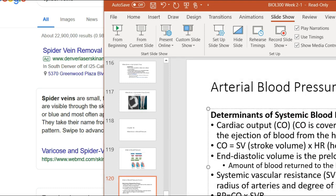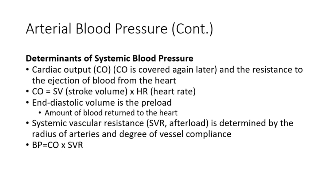Cardiac output — which we'll call CO and cover later — is a major determinant of systemic blood pressure. Systemic vascular resistance is determined by arterial radius and the rest of the cardiovascular system. Cardiac output: that formula is stroke volume times heart rate. This should all be review, very familiar.